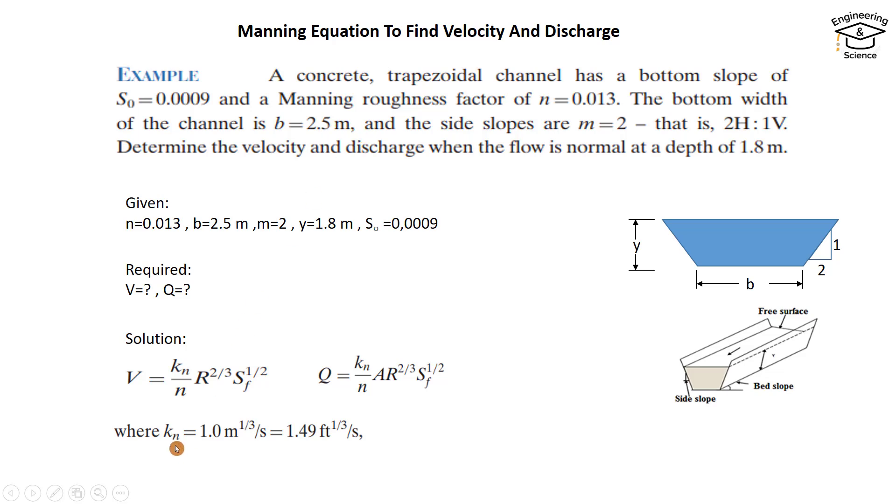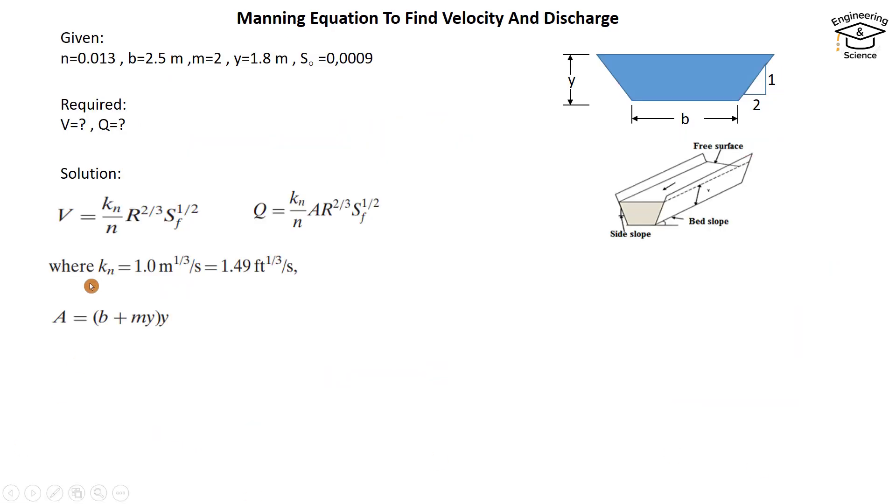But in this problem or example, we use SI units, so we replace Kₙ with 1, so it has no effect. Okay, first you have to find area. Area equals (b + my) times y.